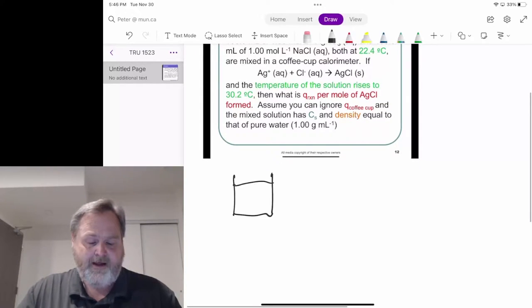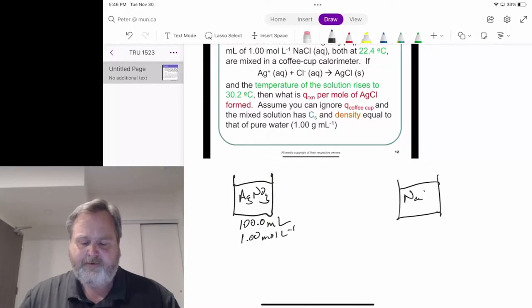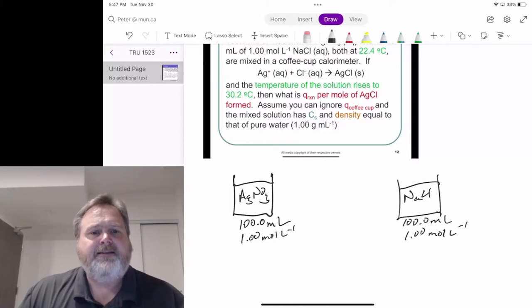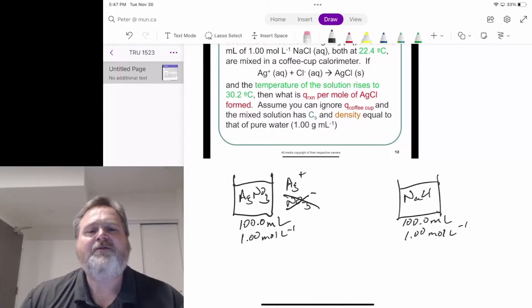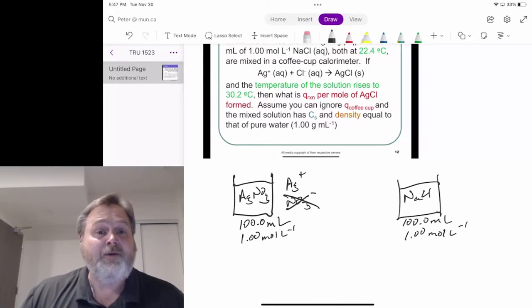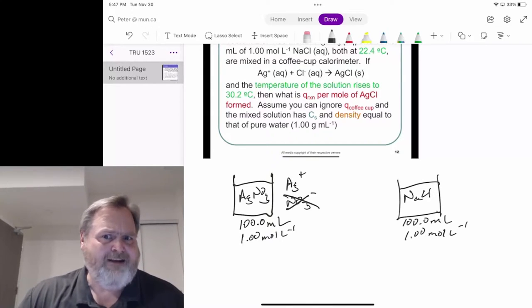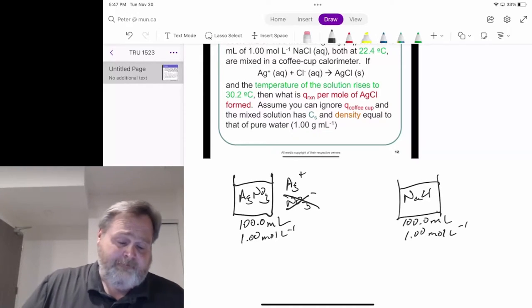We have a container of silver nitrate, 100.0 milliliters of 1.00 moles per liter. Really those are aqueous ions floating around in solution. We've got Ag+ ions and NO3- ions floating around. We're not going to worry about those nitrate ions because they're not part of the actual chemical reaction we're interested in, which means they're not part of the system. They're just spectator ions in the net ionic equation.